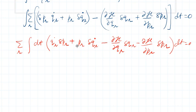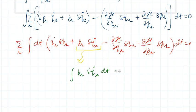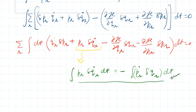Now I use a standard result here. The term integral of p_r * delta(q_r_dot) dt is a standard result, and by doing a little algebra — essentially integration by parts — it can be written as minus p_r_dot * delta(q_r). You can use this as a standard result, or prove it yourself.